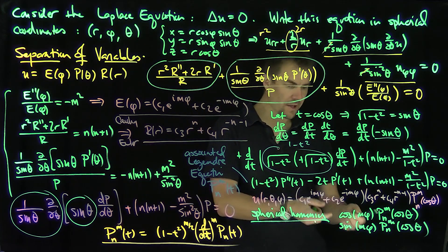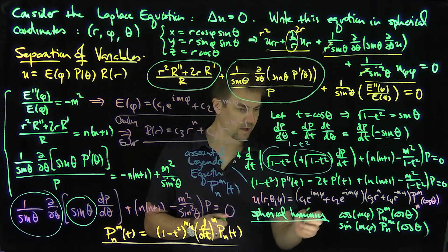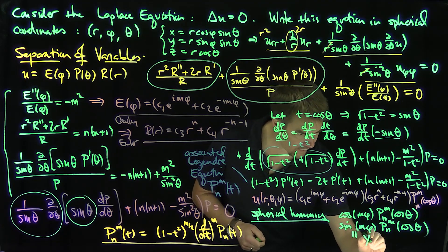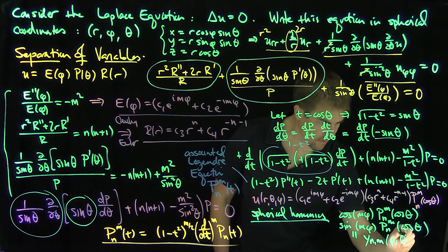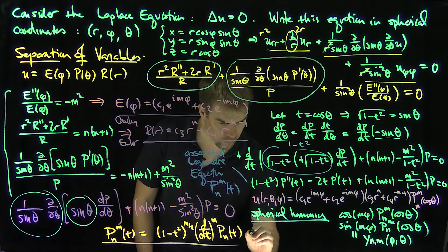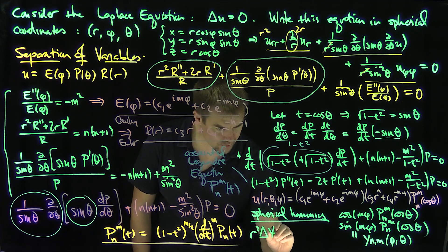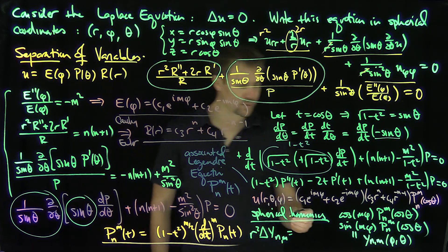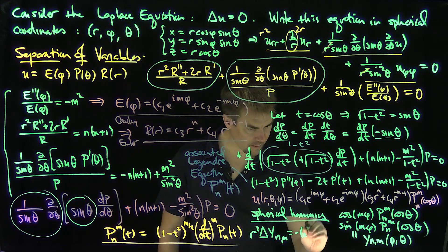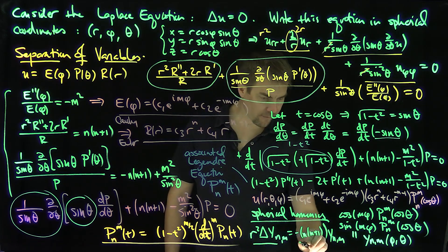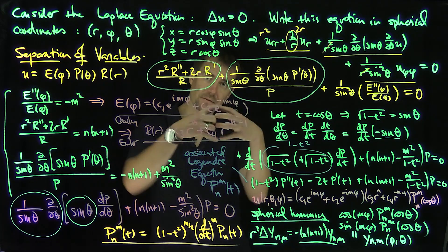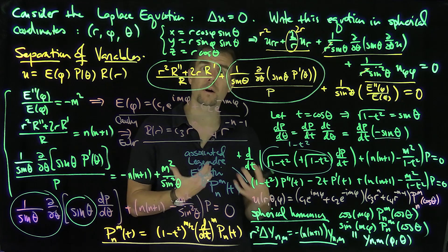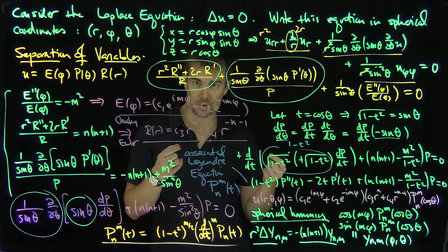These spherical harmonics are the eigenfunctions. We can show that r² Laplacian of Y_n^m = −n(n+1) Y_n^m. In other words, these spherical harmonics are the eigenfunctions of the Laplace operator when restricted to the sphere — the functions that are harmonic on the sphere. They arise as solutions to the Laplace problem on a sphere.